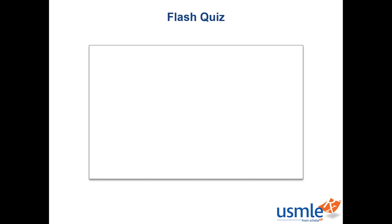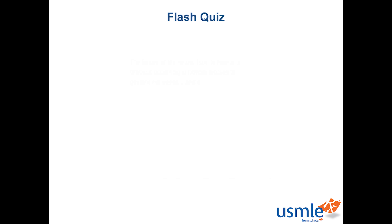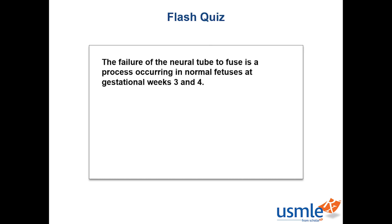Flash Quiz: After routine second trimester ultrasound, a young woman is informed her baby is suffering from anencephaly, which is not compatible with life. In what week of embryogenesis was there failed fusion of the neural tube? The failure of the neural tube to fuse is a process occurring in normal fetuses at gestational weeks 3 and 4. Anencephaly is a type of neural tube defect in which the brain, scalp and skull do not completely form.